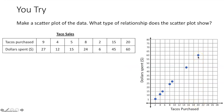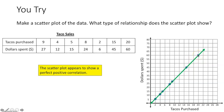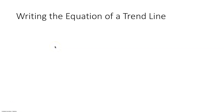Now, is the graph going up and to the right or down and to the right? It's clearly going up and to the right — it's a positive correlation. Is it perfect, strong, or weak? If we draw a line of best fit through these points, it goes through all of the points, so this is a perfect positive correlation.